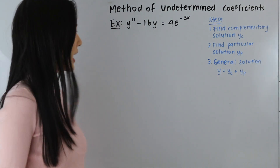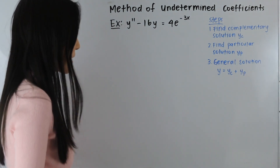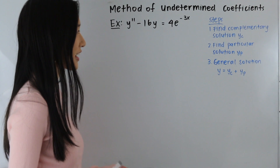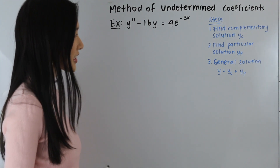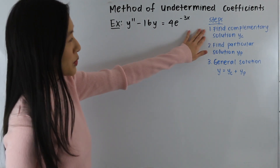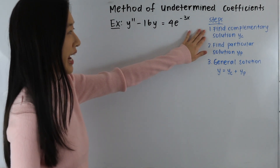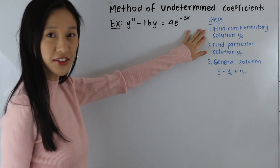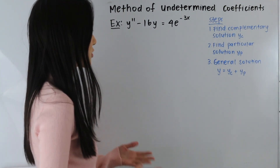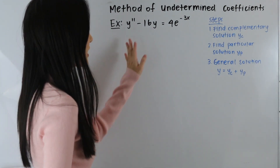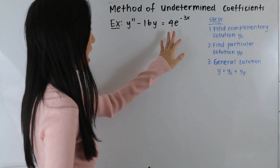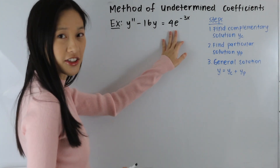So here we have y double prime minus 16y is equal to 4e to the negative 3x. Our first step is we are going to want to find our complementary solution, which is just the solution to the homogeneous version of our differential equation.